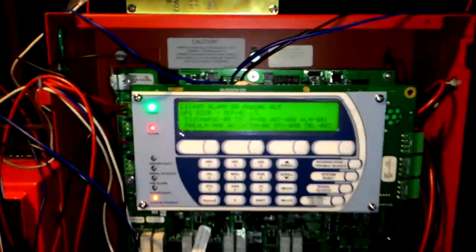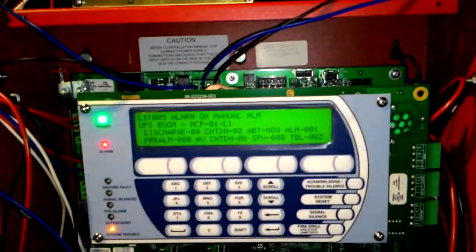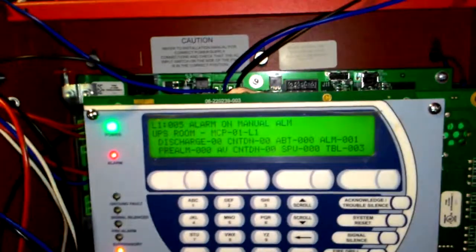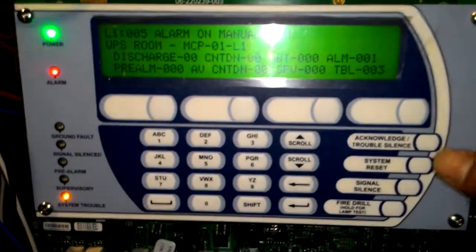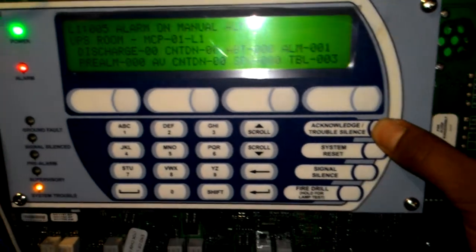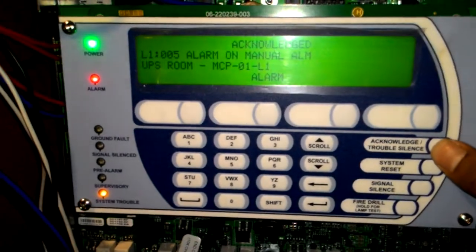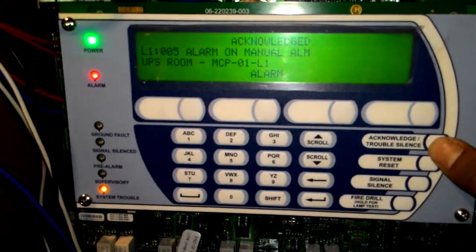So that's the activation of the manual call point. Now to acknowledge any of the alarms, what we do here is you will have to press this soft key that is acknowledge. This would be in the case if there is confirmation that there is no fire in the premises.